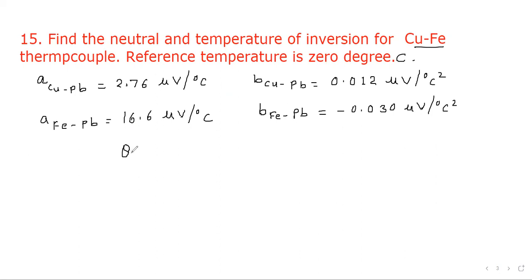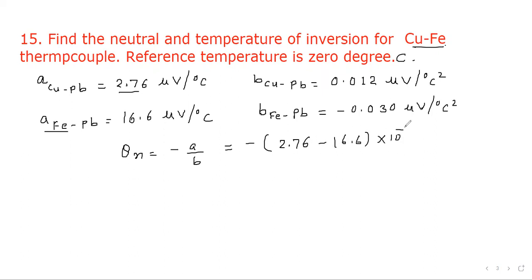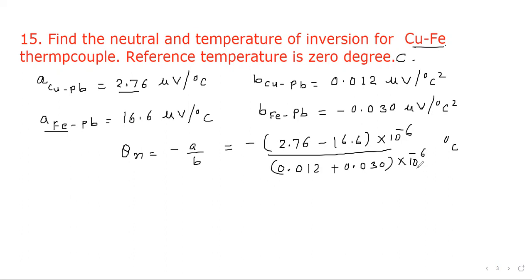We know that the neutral temperature is equal to negative A divided by B. We write the value of A for copper with respect to lead and for iron with respect to lead, then take the difference. So A becomes minus (2.76 minus 16.6) into 10 to the power minus 6, and B becomes 0.012 plus 0.030 into 10 to the power minus 6 per degree centigrade. This gives us a neutral temperature of 328.57 degrees centigrade.